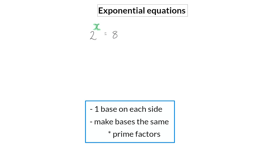In the equation written above, we already have one base on each side, so next I'm going to try and make these bases the same. On the left we have a base of 2, which is already a prime number, but on the right we have 8, and this can be rewritten in terms of prime factors as 2 to the power of 3. If we now have a look at this equation, the base on the left is exactly the same as the base on the right.